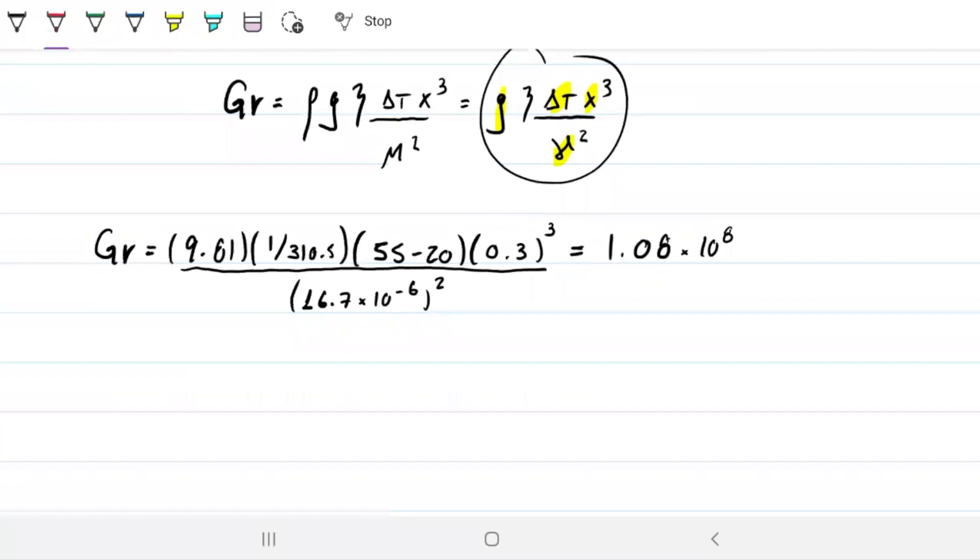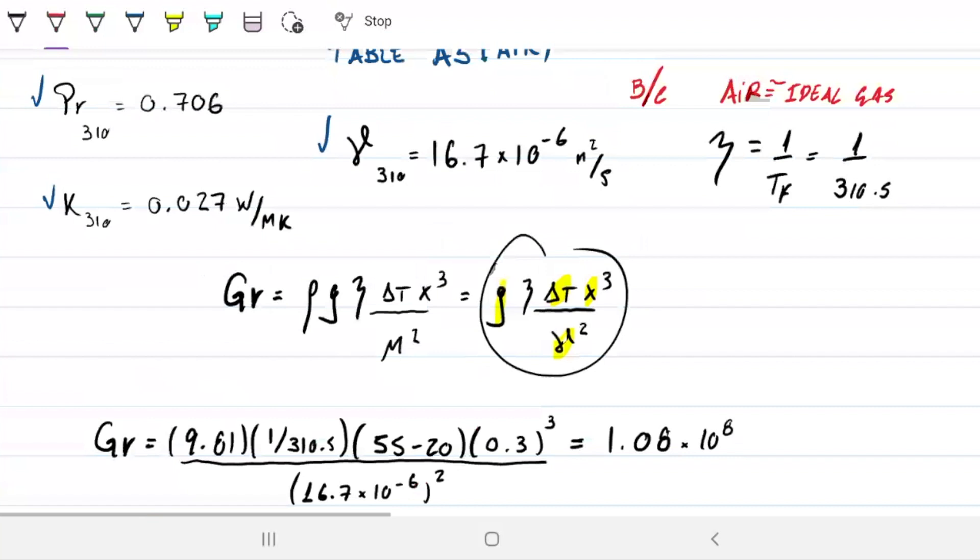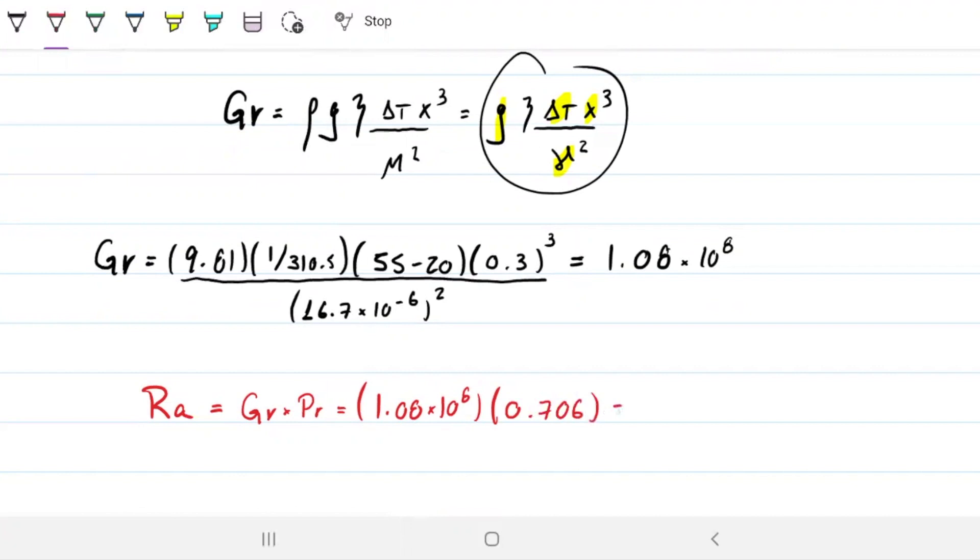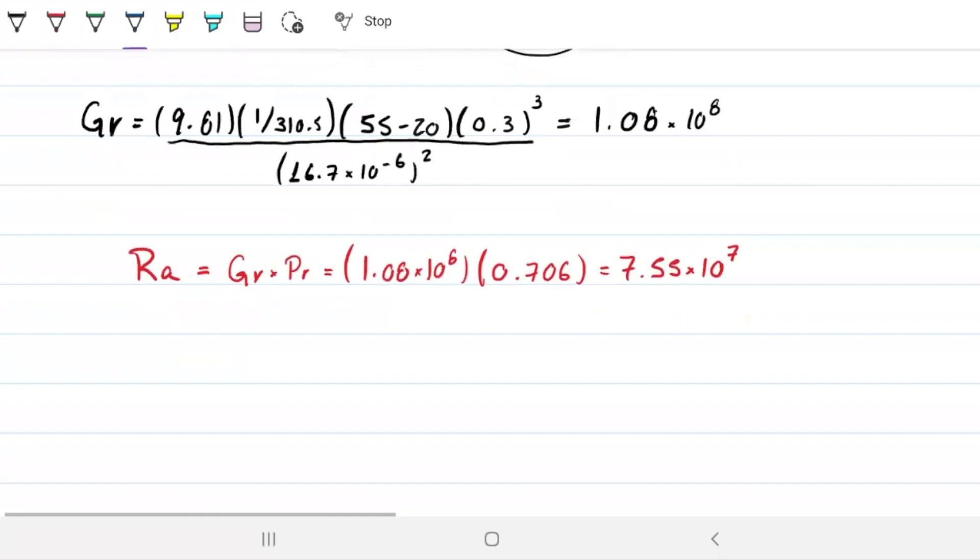And we now need to find Rayleigh number, because the table that gives us the coefficient gives us in terms of Rayleigh, which is literally just Grashof times Prandtl. So it's 1.08 times 10 to the eighth times the Prandtl 0.706, which is 7.55 times 10 to the seventh.